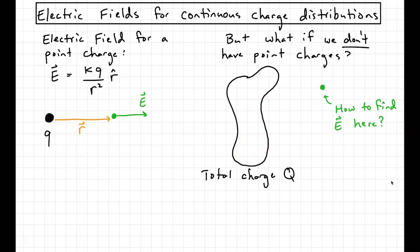The process might feel kind of familiar, but it's important to go through it again. The way we're going to break this down is we're going to treat this continuous charge distribution like it's made up of a bunch of point charges. We take a tiny little piece of this object, and that little piece is going to have a little bit of charge dq. And dq is so small that it's effectively a point charge within the larger charge distribution.